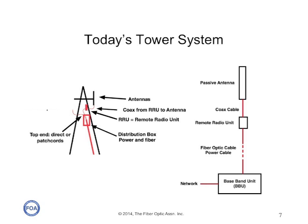On most systems today, a single cable has both fiber and power carried up the tower. It's terminated in a distribution box that breaks out the fiber signal to the remote radio unit and power separately. The remote radio unit then has a coax cable that goes directly to the antenna.